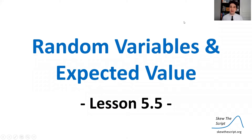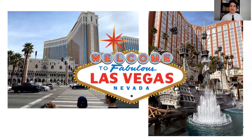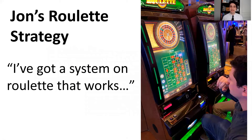Today's lesson is on random variables and expected value. This is lesson 5.5 in our course sequence. And we're going to start today in the fabulous Las Vegas, Nevada, a place I've visited multiple times with my friends.